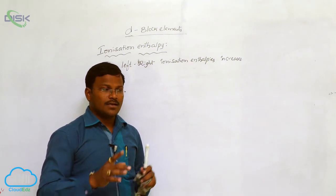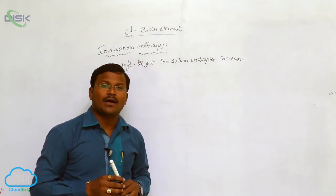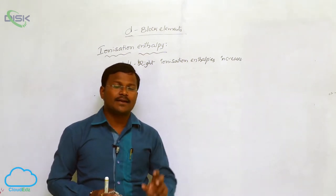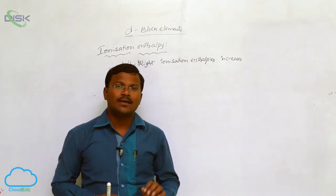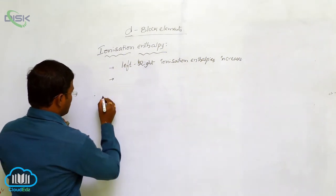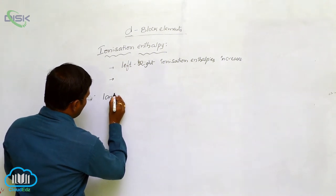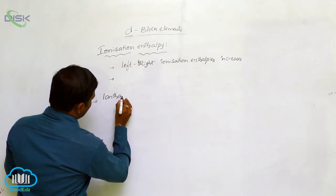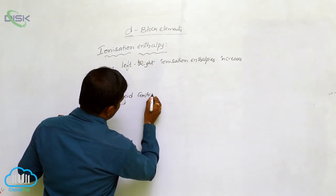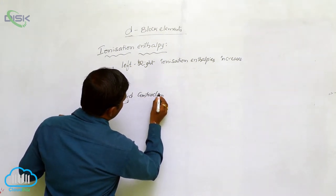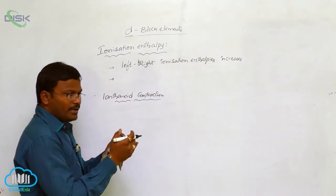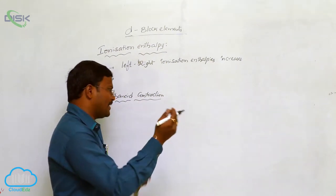In the case of atomic radii or ionic radii, the most important factor that determines ionic or atomic size is lanthanide contraction. This is a very important concept. The key question is: what does lanthanide contraction mean?